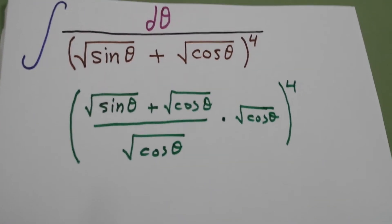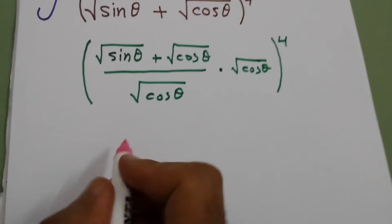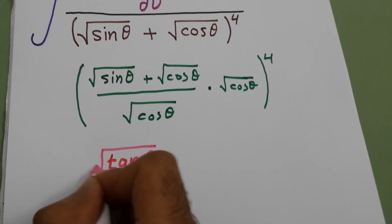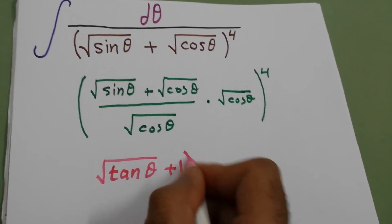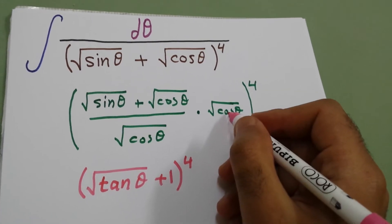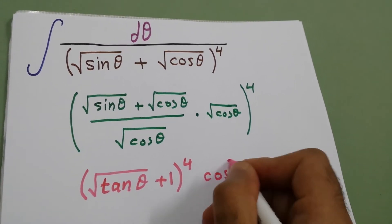So here we have sine over cosine. It will be tan square root plus one, all to power four. And cosine, square root of cosine to power four will be cosine square.